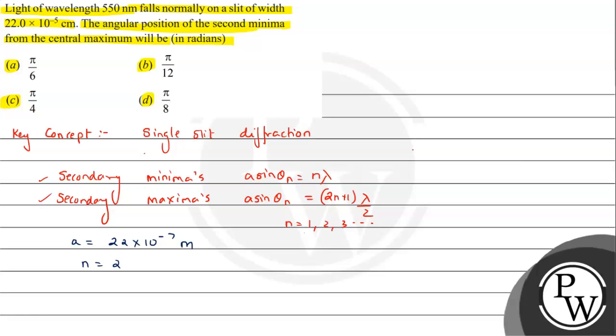For the central maxima, the path difference should be zero. From this we can say for minima we can write a·sinθ will be equal to 2λ.